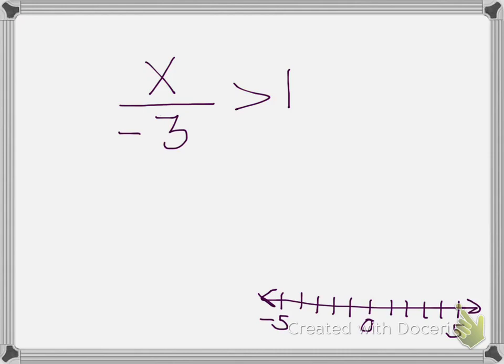Alright, let's look at another example. This one says x divided by negative 3 is greater than 1. So, in this case, since it's originally being divided by negative 3,